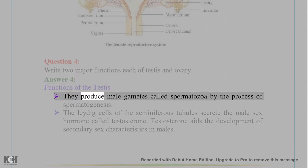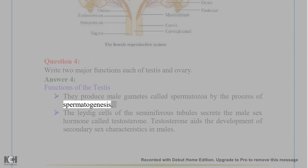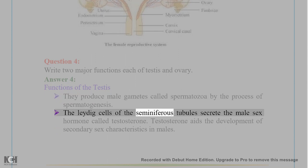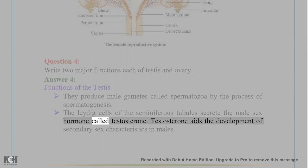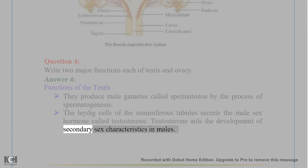The Leydig cells of the seminiferous tubules secrete the male sex hormone called testosterone. Testosterone aids the development of secondary sex characteristics in males.